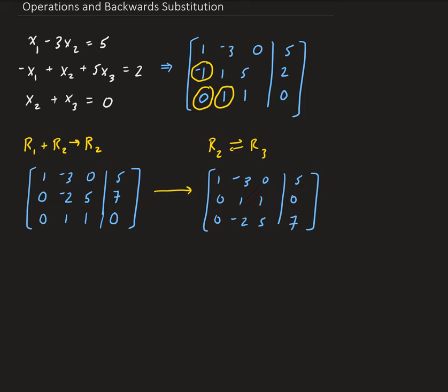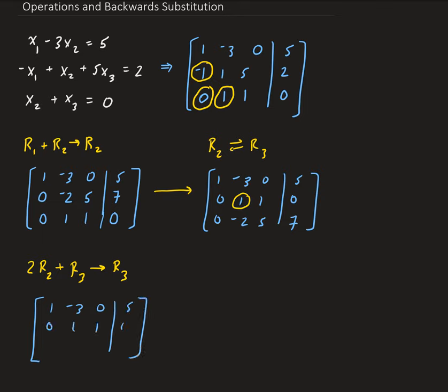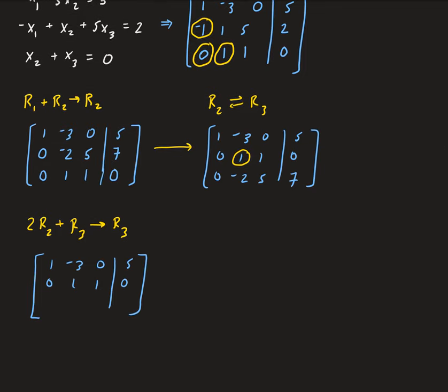From here, we can make row 3, column 2 equal to 0 by taking 2 times row 2 and adding it to row 3, storing the result in row 3. Row 1 stays 1, negative 3, 0, 5. Row 2 stays 0, 1, 1, 0. For the new row 3: 2 times 1 plus negative 2 gives 0, 2 times 1 plus 5 gives 7, and 2 times 0 plus 7 gives 7.